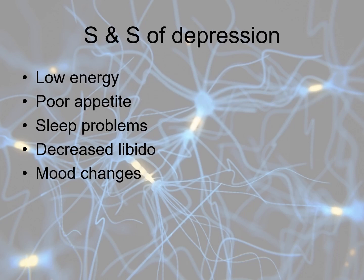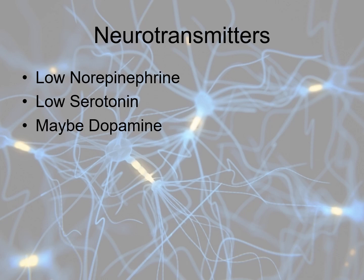Going back to signs and symptoms of depression — mood changes do occur and patients feel sadness, but you can also see people with just low energy, poor appetite, sleep problems, decreased libido, and similar symptoms. We know that low norepinephrine may cause depression, which is why we try to raise it with SNRIs. Low serotonin can also cause depression, which we raise with SSRIs or SNRIs. Dopamine is also relevant — it's the happiness neurotransmitter, and people with Parkinson's disease, who lack adequate dopamine, will often feel depressed as well.